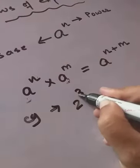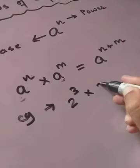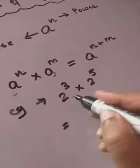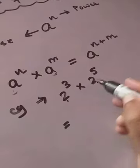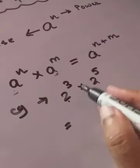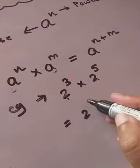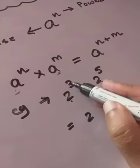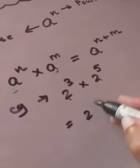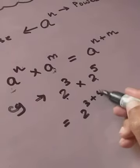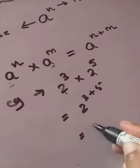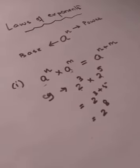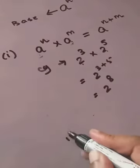Example: two to the power three, multiplied by two to the power five. The base is two in both cases — it's the same. So we add the powers: three plus five equals eight. The answer is two to the power eight. It's as simple as this.